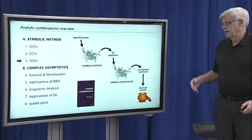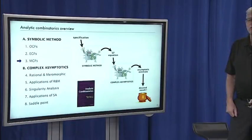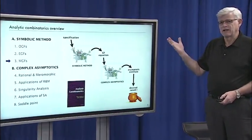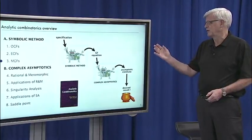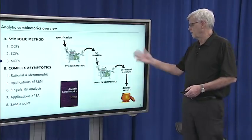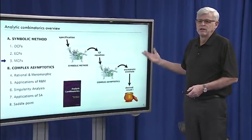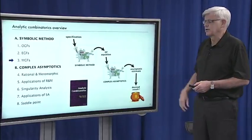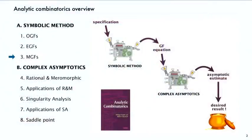Today we're going to talk about combinatorial parameters and multivariate generating functions. This is a way of using basically the same formal methods to get much more information about the combinatorial structures that we're studying. We're still working with the symbolic method, where we have automatic methods for getting from a specification to a generating function equation. And then later we're going to talk about use of complex asymptotics to get an asymptotic estimate for the counting results. But now we're going to focus on getting to the generating function equations.